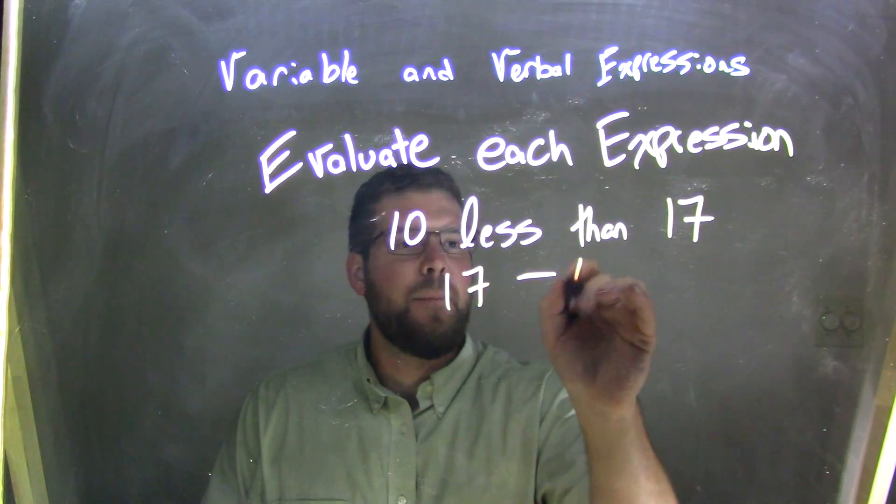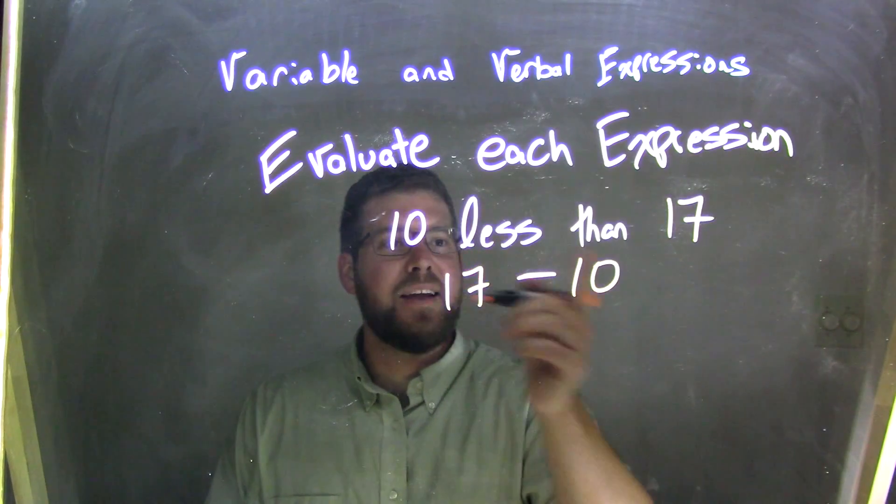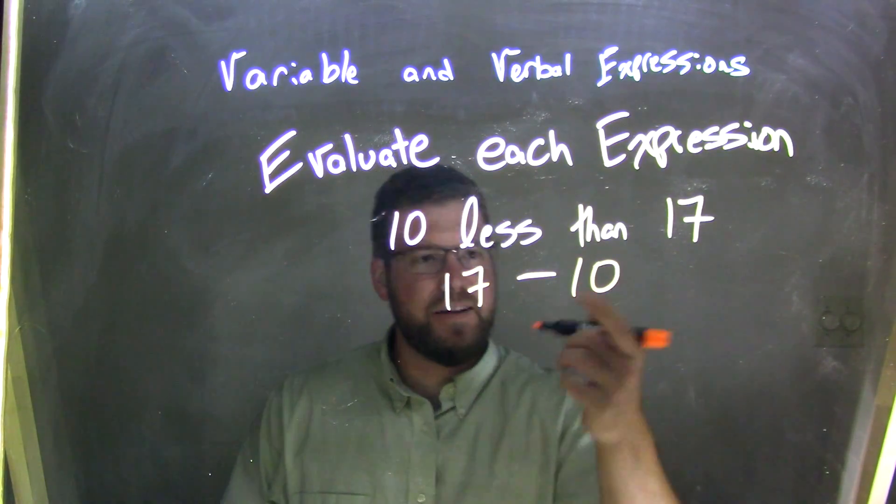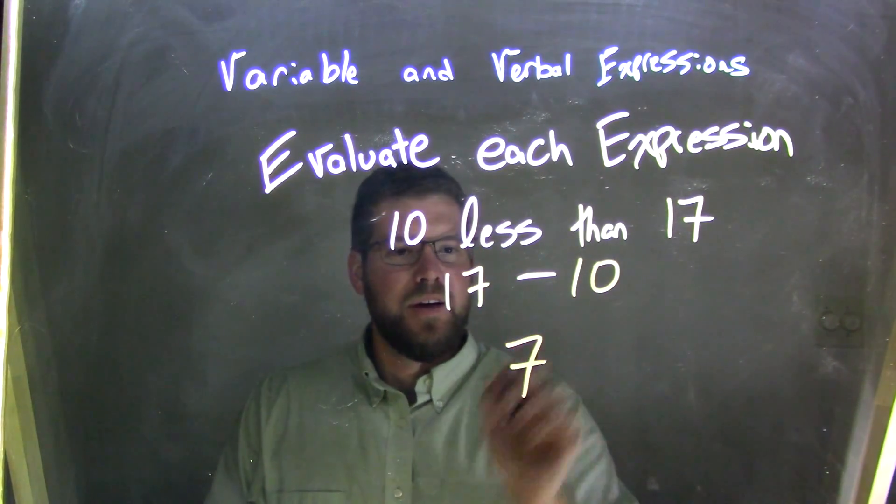So it becomes 17 minus 10. 10 less than 17. 17 minus 10, which is just 7.